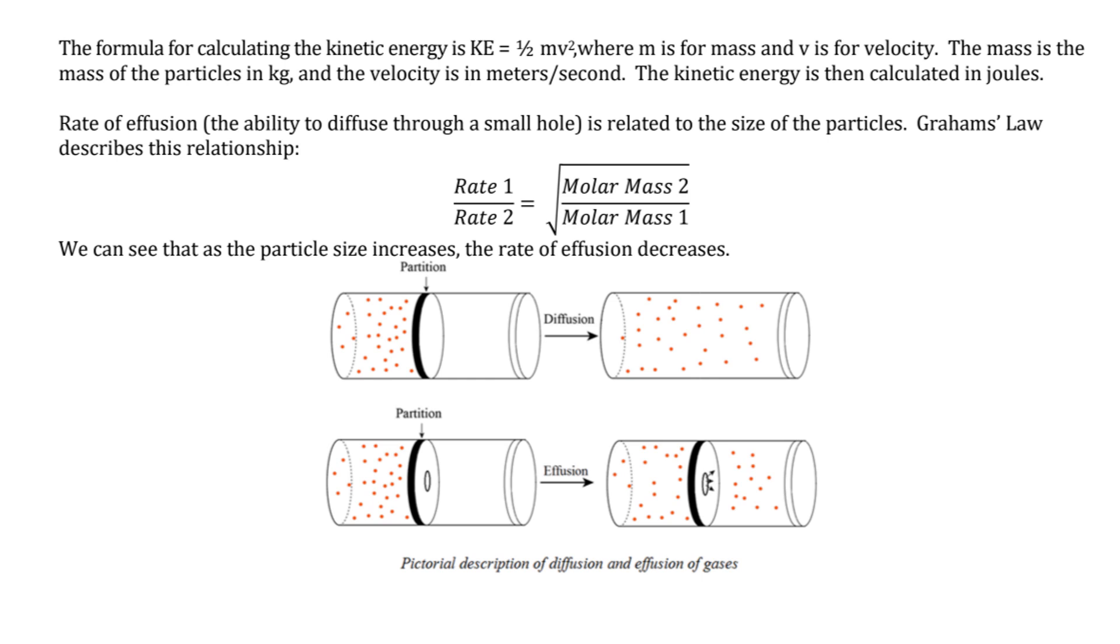So rate of effusion, that is the ability to diffuse through a small hole, and it's related to the size of the particles. Graham's law describes this relationship. So you don't have to do any math with this, but conceptually you have to have a general understanding. So you have a gas, and it's on one side of a partition. You remove the partition, and it diffuses. It goes from one end to another. That's what's happening in the first diagram.